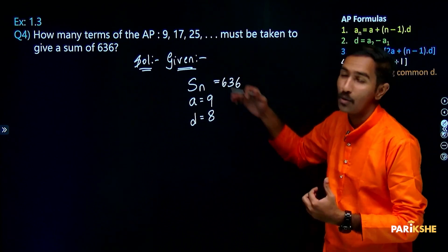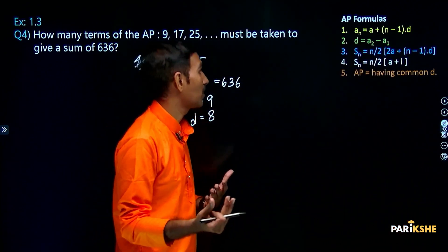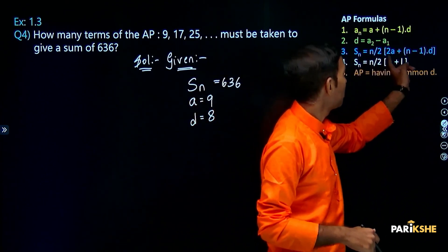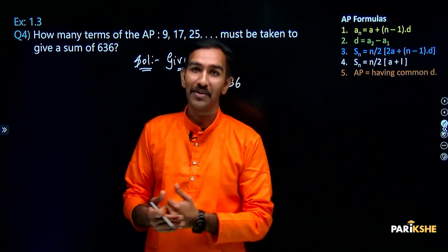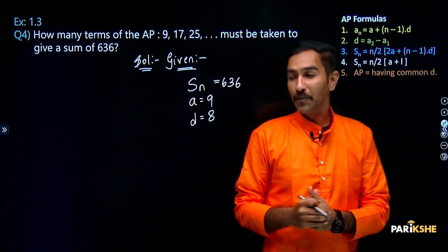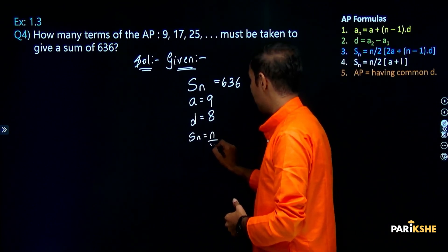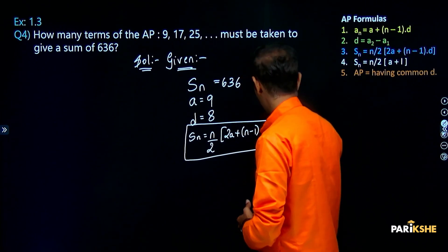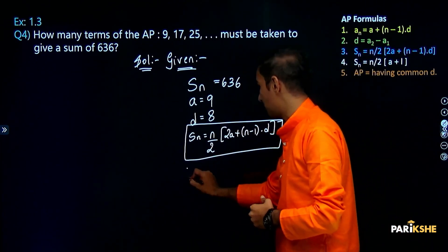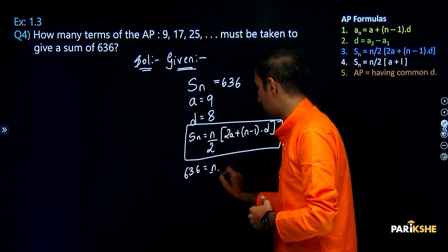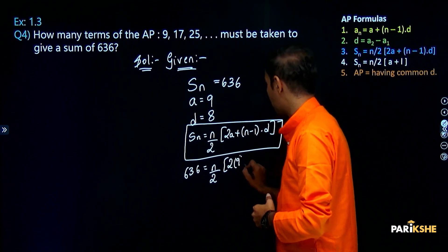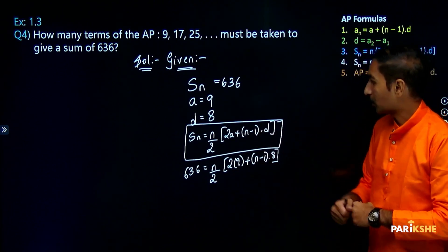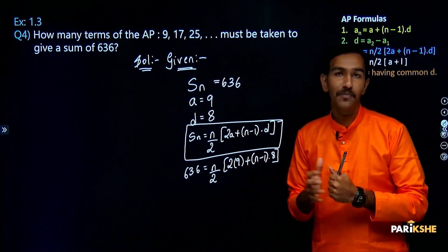The last term is not given. So we don't know the last term. Since we know S, n, a, and d, we use formula number 3. With n unknown, we use the formula: Sn = n/2 of (2a + (n-1)d). Now let's substitute the known data into the formula.